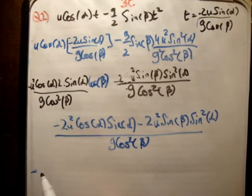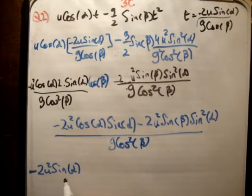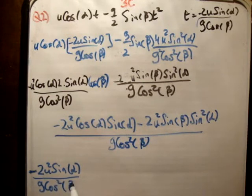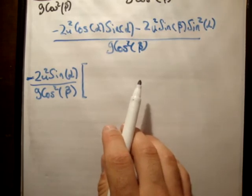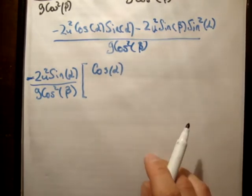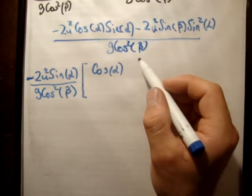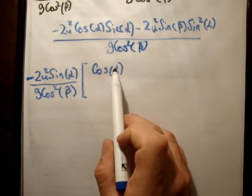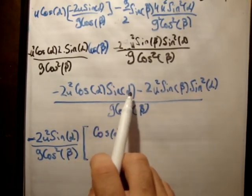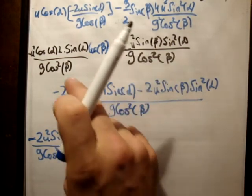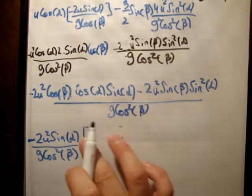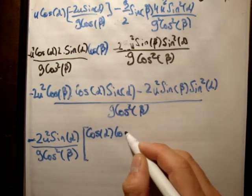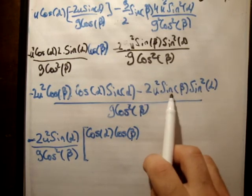We pull out 2u² sin alpha over g cos² beta. I notice I missed a cos beta earlier — fixing that: the numerator becomes minus 2u² cos alpha cos beta plus 2u² sin alpha sin beta, so pulling out the factor leaves cos alpha cos beta plus sin alpha sin beta inside the bracket.